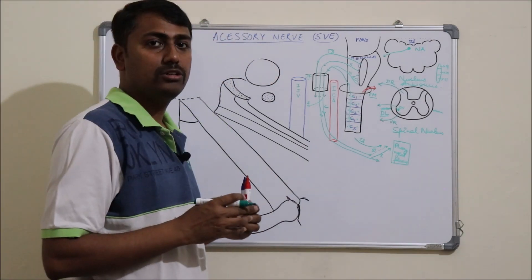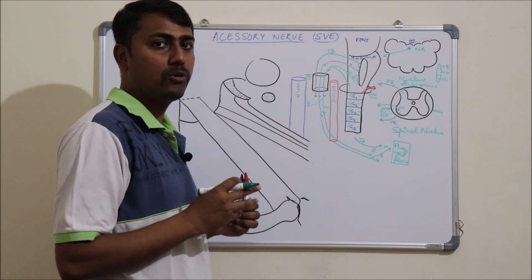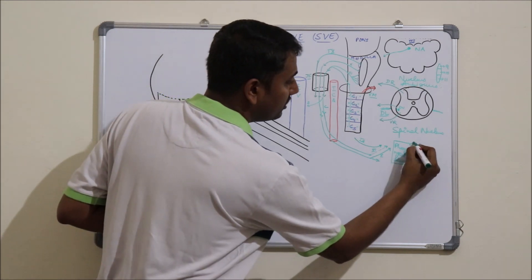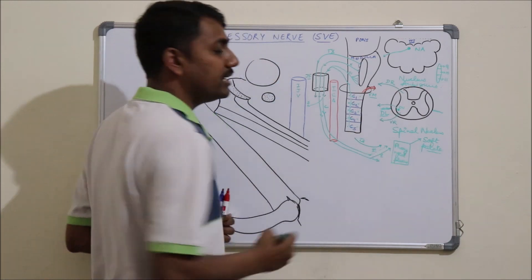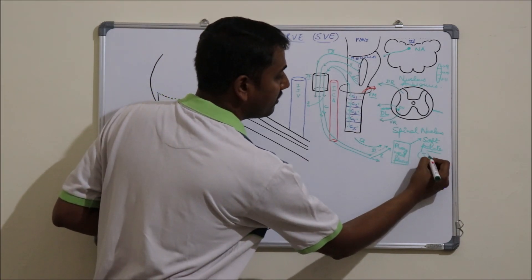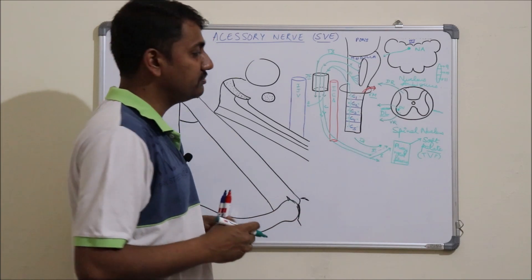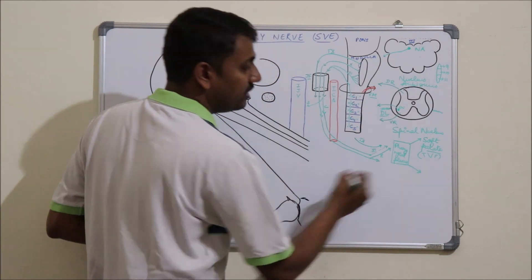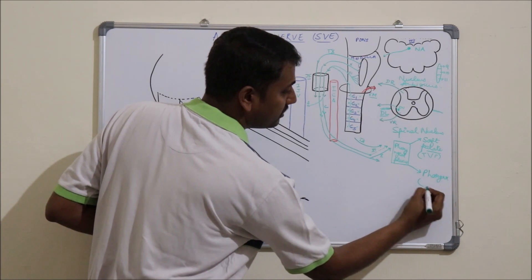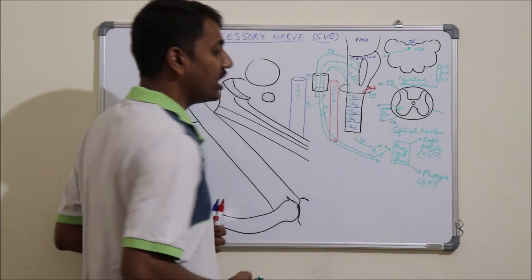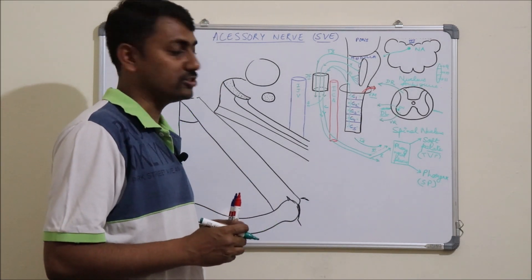These three nerves together form a plexus known as the pharyngeal plexus, which lies superficial to the constrictors of the pharynx. This pharyngeal plexus supplies two important structures of the neck: the soft palate — all its muscles except tensor veli palatini, which is supplied by the mandibular nerve as it is derived from the 1st pharyngeal arch — and all muscles of the pharynx except stylopharyngeus, which is supplied by the glossopharyngeal nerve as it is derived from the 3rd pharyngeal arch.